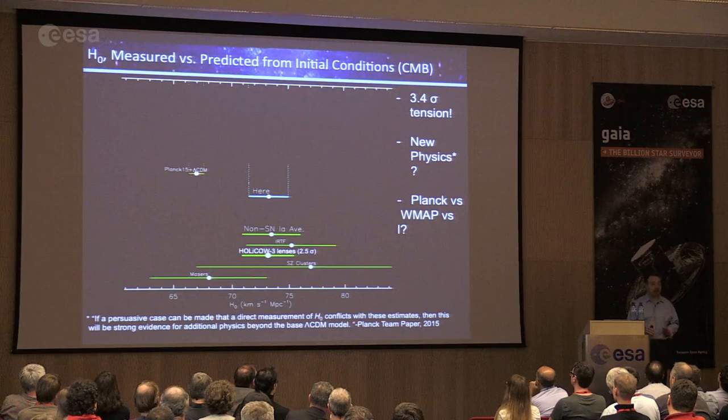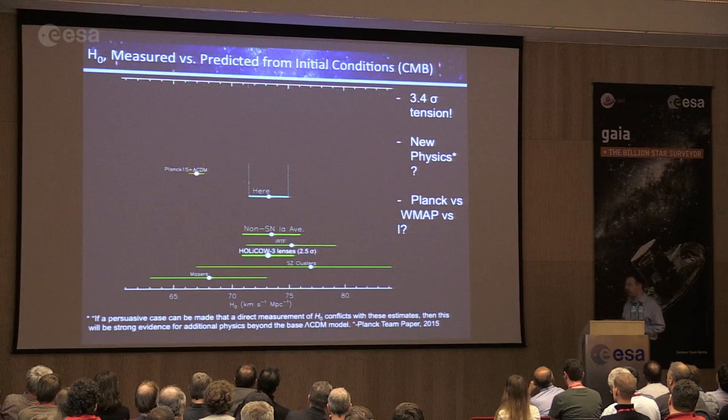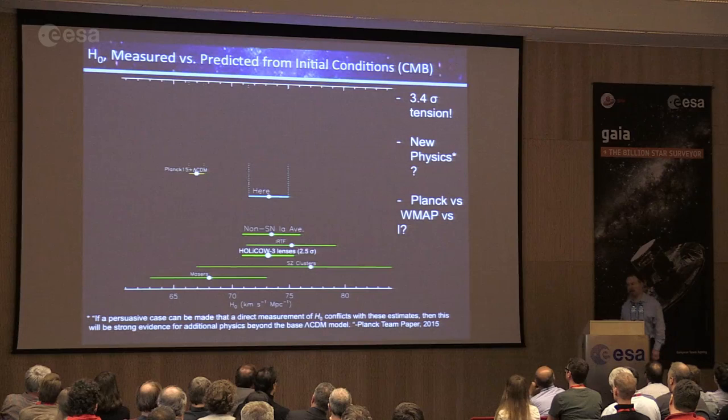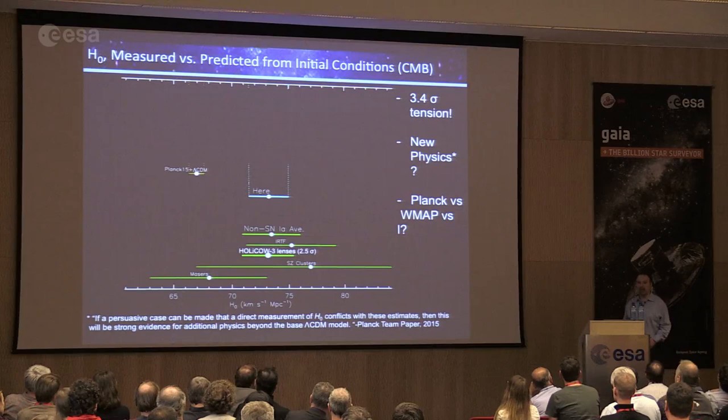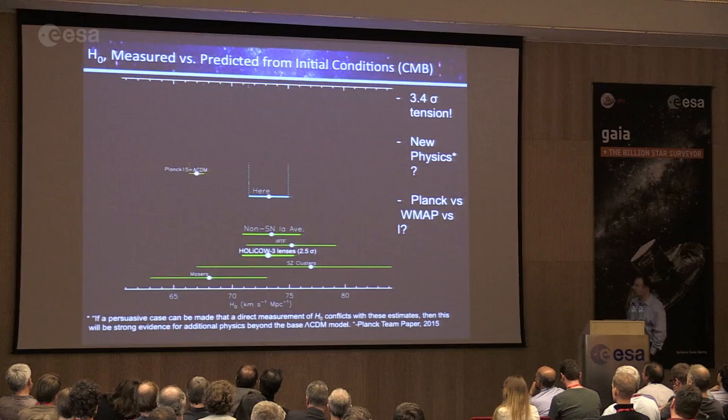One of three things is going on: something wrong with our measurement, something wrong with Planck, or interesting new physics. I'll address all three. This is our DR3 and their DR3 — mature measurements from groups that have put in great thought, effort, and analysis. It's not a first result.